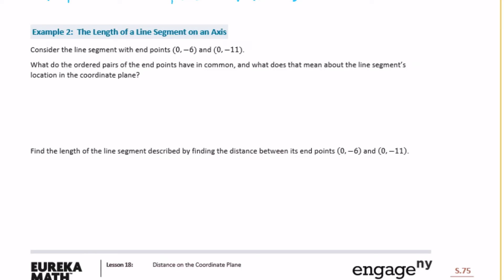Example 2: consider the line segment with endpoints 0, negative 6 and 0, negative 11. What do the ordered pairs have in common, and what does that mean about the line segment's location in the coordinate plane?